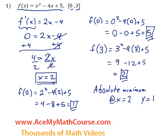And the absolute maximum is going to be, of course, the highest number within the interval. And the highest value is 5. So there's an absolute maximum.